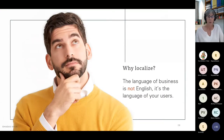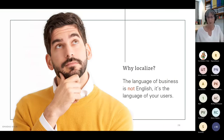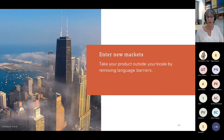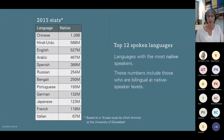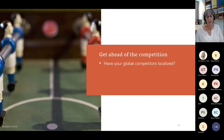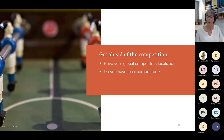Why do we localize? We want to connect with our users in the target market. Note that it's better to postpone localization than to have a badly translated and localized website — a consistent English site is better than a badly localized one. We want to enter new markets: we can't cover all 7,102 living languages, but two-thirds of the world population share a more manageable 12 languages — those with the most native speakers. We want to get ahead of the competition: if you don't have global competition you're ahead; if you do, you better get started. And if you have local competitors, they're already ahead of you — localization is a way to challenge their position.